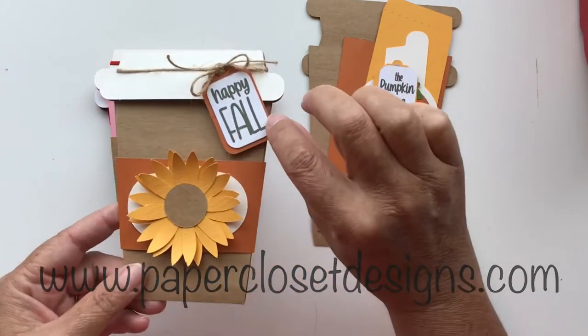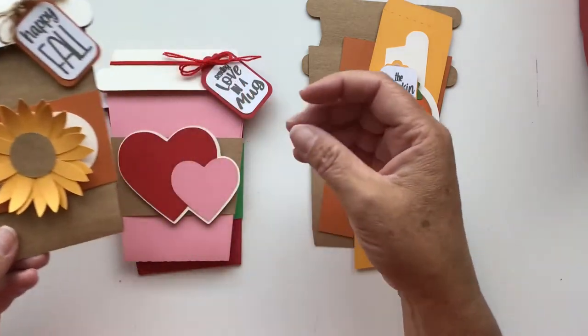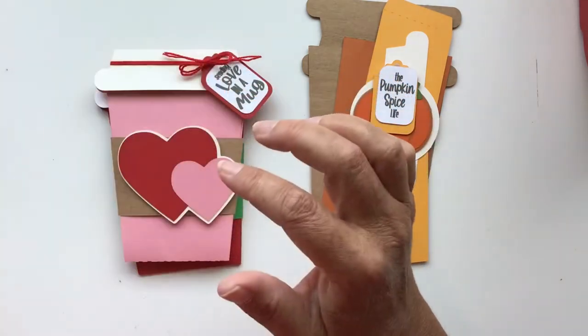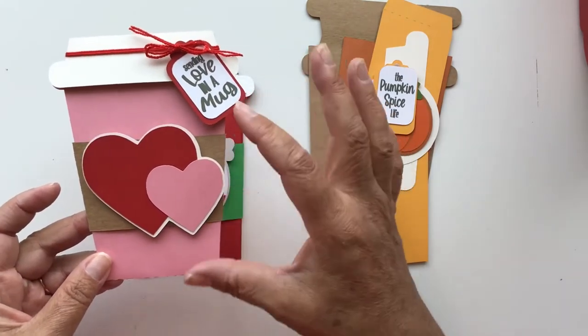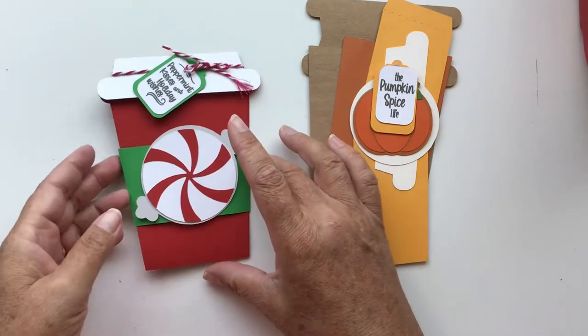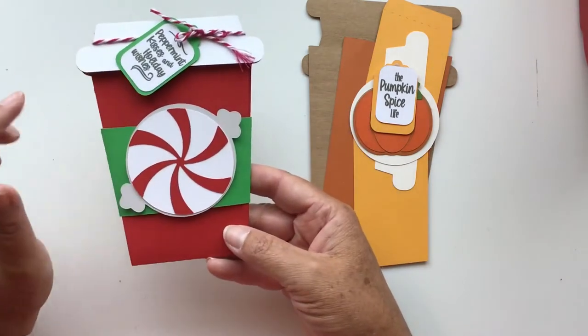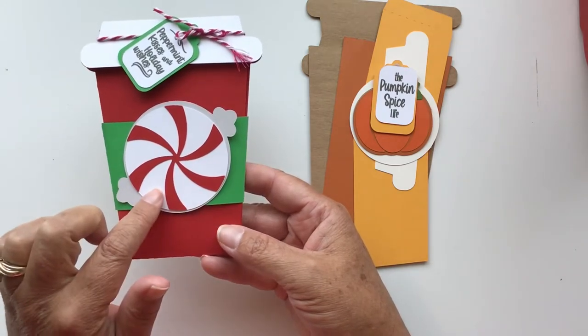This is the fall one with a printable tag that says Happy Fall with a sunflower. We have one that says Sending Love in a Mug with double hearts. This is the Christmas one that says Peppermint Kisses and Holiday Wishes with a peppermint candy.